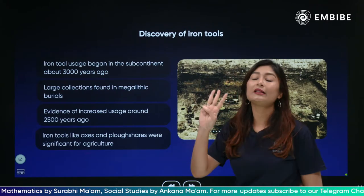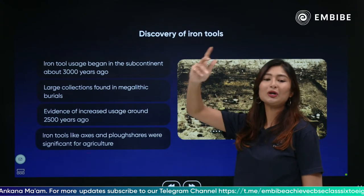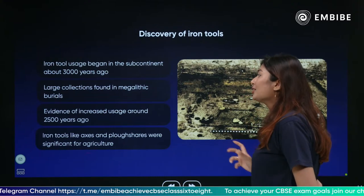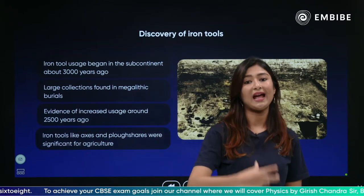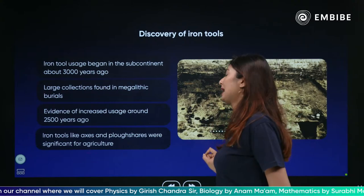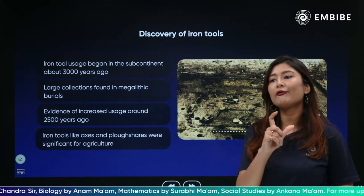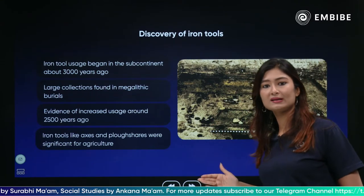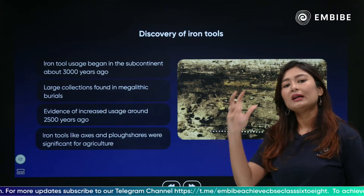Around 3000 years ago — we are now in 2023, so this was before the Christ era itself — there was no existence of iron tools. A large collection was found in megalithic burials. When we do the digging and find various things that age back 3000 years, we see iron materials. Evidence shows increased usage around 2500 years ago, meaning the discovery was made around 3000 years ago, but its full utilization didn't start until about 500 years after the discovery — time was needed to evolve and transform it.